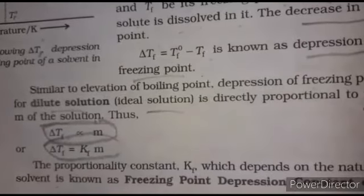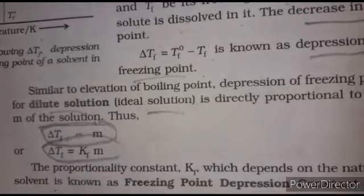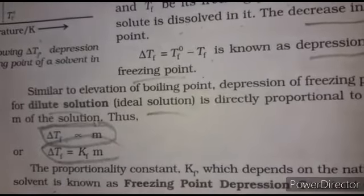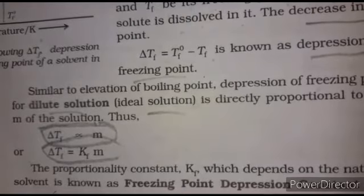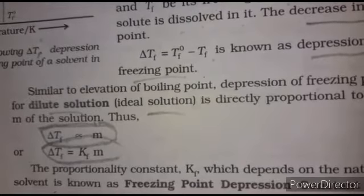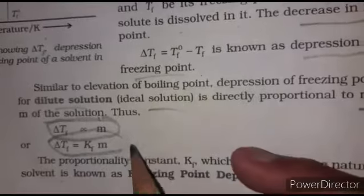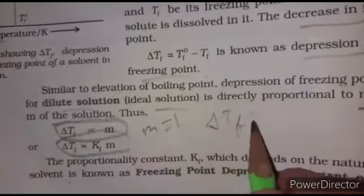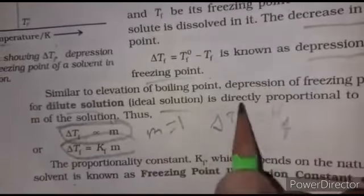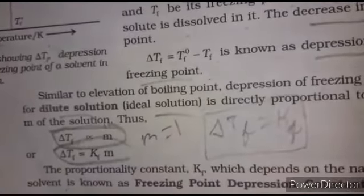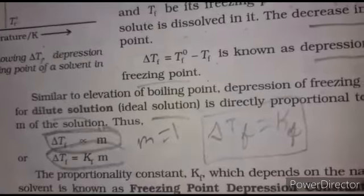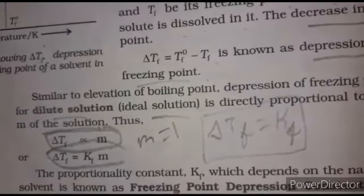Kf is the freezing point depression constant, also called the molar depression constant or cryoscopic constant. The unit of Kf is Kelvin·kilogram per mol. When molality m equals one, delta Tf becomes equal to Kf. So the definition of Kf is: it is the depression in freezing point when the solution is one molal.